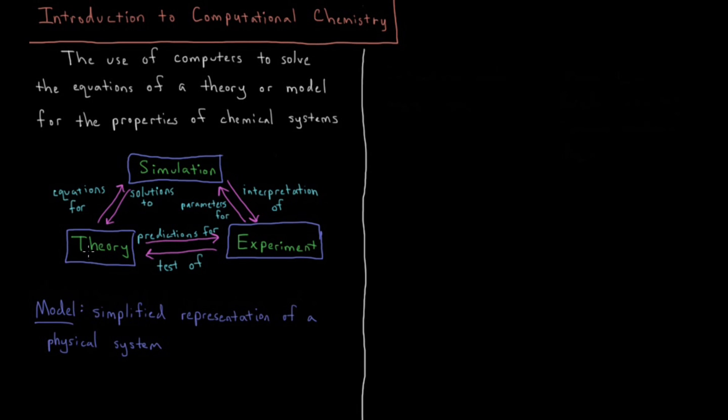Okay, so we had our traditional situation here with theory and experiment, but due to the advent of modern computers, computers are now capable of performing arithmetic so quickly that we have what's essentially another branch of science emerging called simulation. So now with theory, we can generate mathematical equations which are very complicated and require a lot of intense computing, but simulation can find solutions to those theories or to those models.